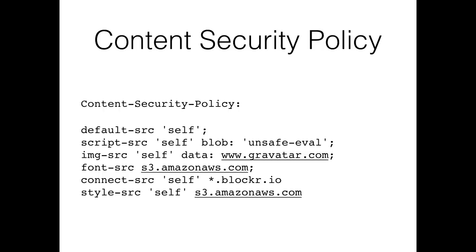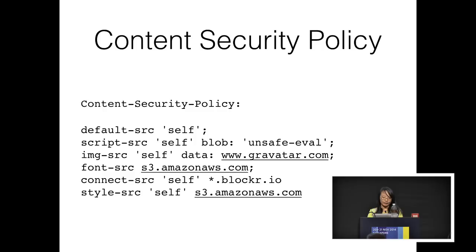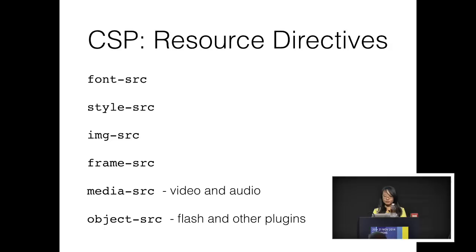Here is an example with multiple directives defined in the same header. I break them up into multiple lines here, but they stay on the same line when you actually set them. Directive values can be domains or CSP keywords. Some of the keywords are 'self' and 'none.' I also include 'blob' in the script-src because I use web workers — an inline web worker will require that blob. We'll look at what each of them means in subsequent slides.